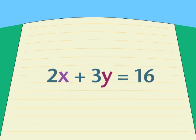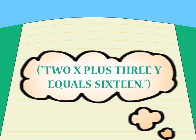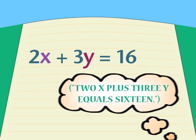They're incomplete, and since they don't make a complete statement, they can't be true or false. An equation is not like a phrase or expression. Rather, it's like a complete sentence when you read it in words. Because it's a complete statement, an equation can be true or false.